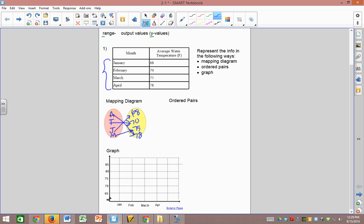Ordered pairs. It's pretty simple. We just do an x and a y value. Our x's are the month. So J can go with 68, F goes with 70, M goes 75, April, A goes with 78. Beautiful.